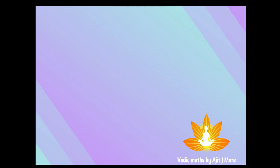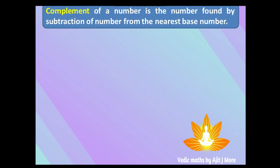Now let's see what is complement. The complement of a number is found by subtracting the number from the nearest base number. So if you have a number x and you subtract x from its nearest base, whatever answer you get is the complement of x. It is often written as x-bar. So x-bar equals nearest base minus x, or equivalently, x plus x-bar equals the nearest base.